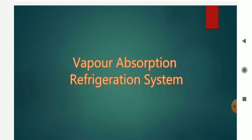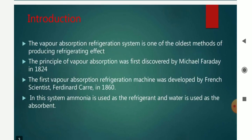Basically, refrigeration means that the space to be cooled requires us to extract the heat from that particular space. The Vapor Absorption Refrigeration System is one of the oldest methods and it was invented by Sir Michael Faraday in 1824. The first Vapor Absorption Refrigeration Machine was developed by French scientist Mr. Ferdinand Carré. In this system, ammonia NH3 is used as the refrigerant and water is used as the absorbent.